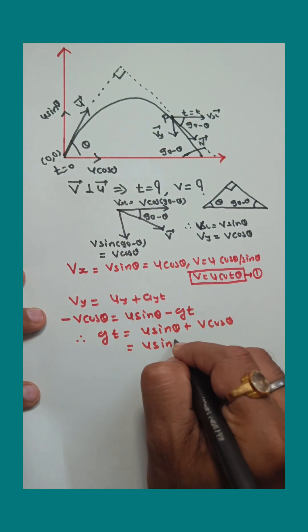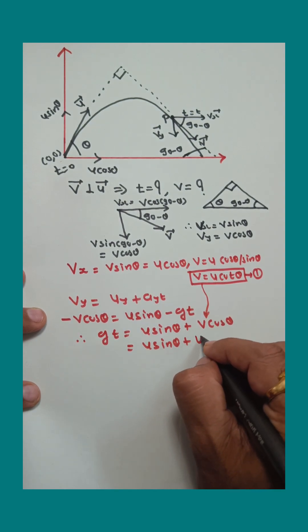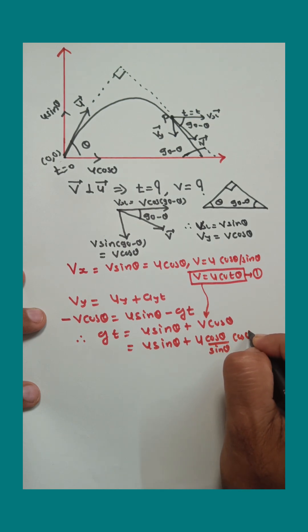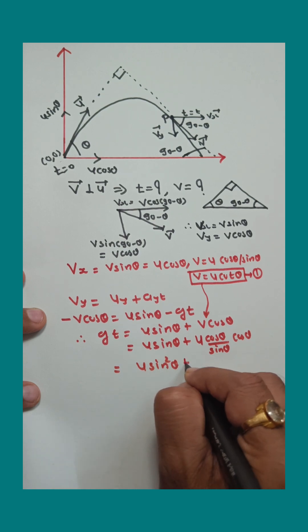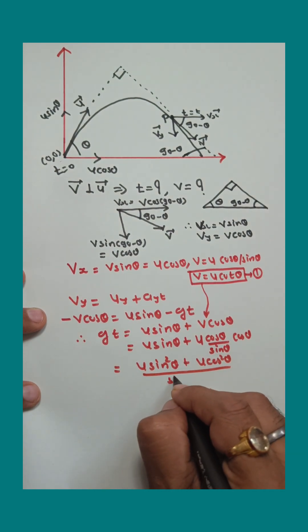So u sin theta, now substitute the value of v here. v equals u cot theta, which means u cos theta upon sin theta times cos theta.